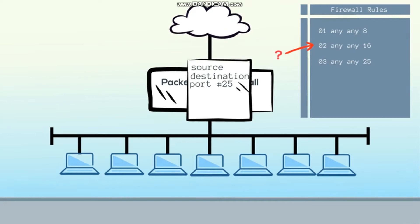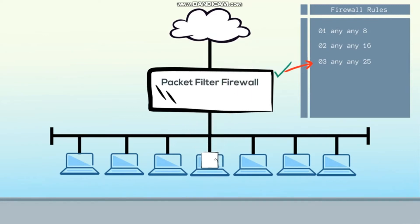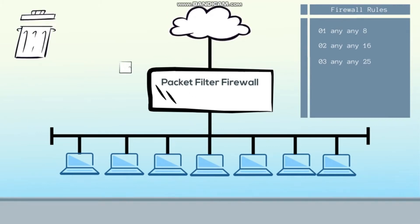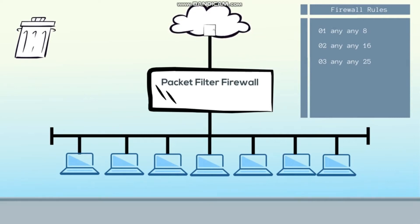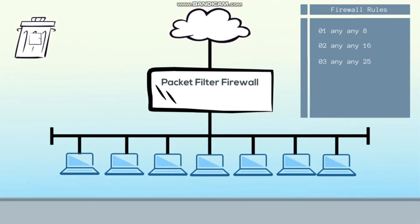If the packet's network addresses, protocol, and port number match those of a packet filtering rule in the firewall, it would be allowed to pass through. If it didn't, it would either be silently dropped or blocked with a special message being sent back to the sender, indicating that their traffic was blocked. In general, these early packet filter firewalls were very simple and blocked all traffic by default, except for packets that matched one or more rules.